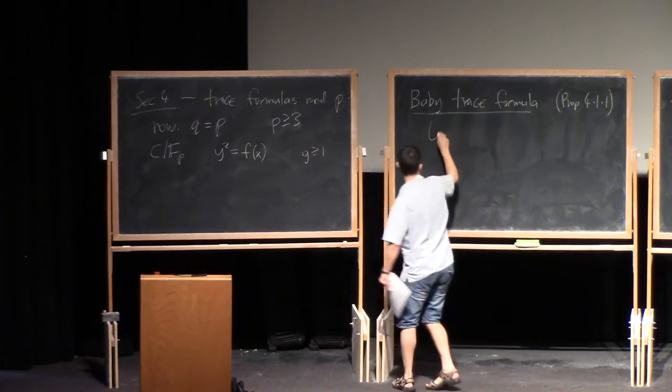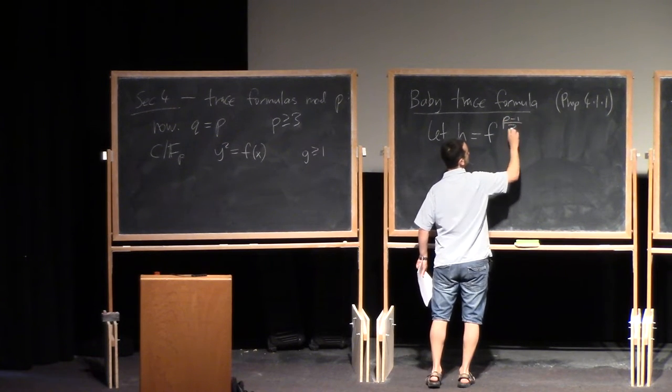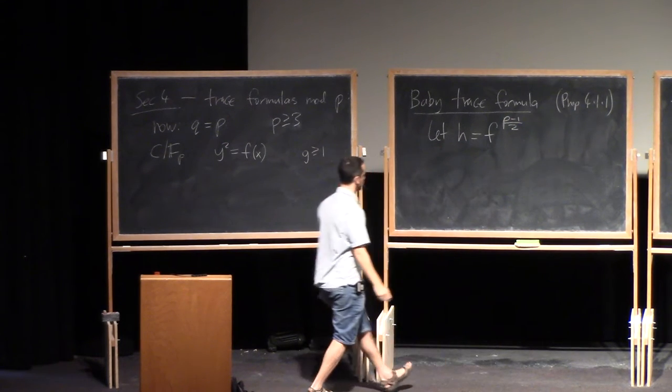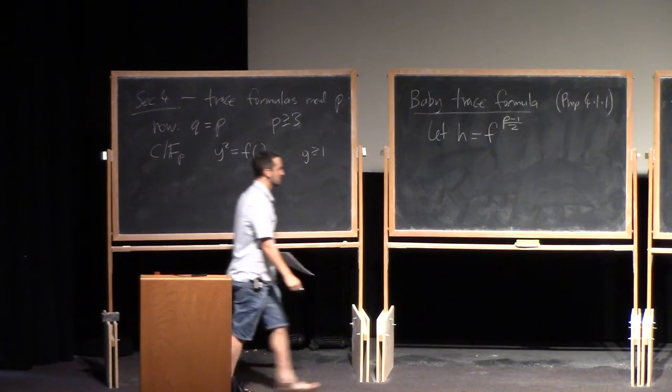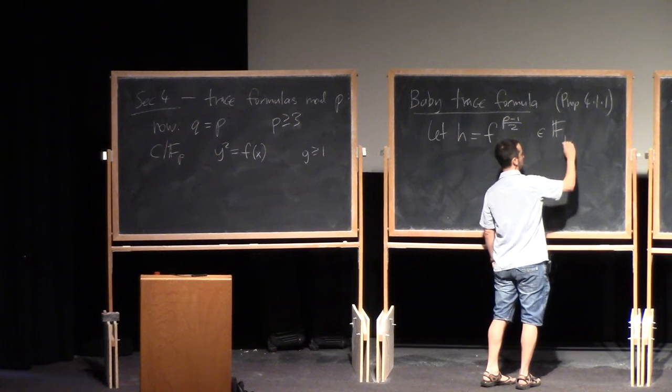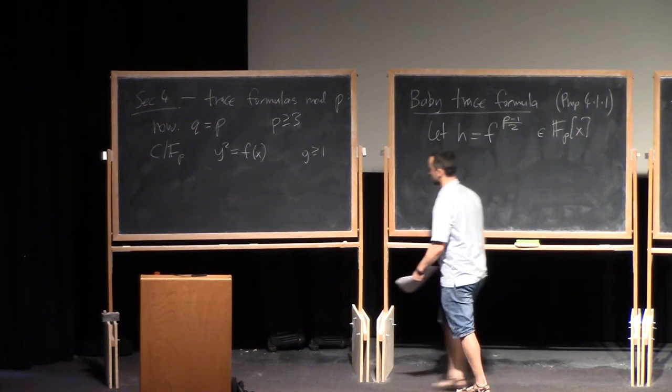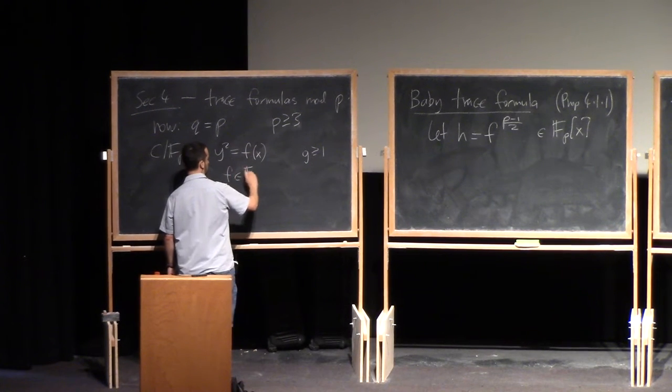Okay, so let H be F to the P minus 1 over 2. So F is our defining polynomial. And I take F to the P minus 1 over 2. So this is also a polynomial in F_P[X]. I should have said here, F is F_P[X].